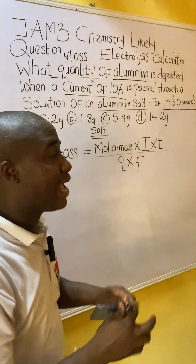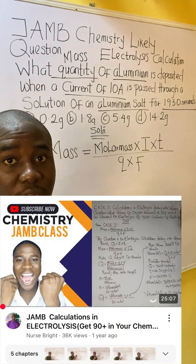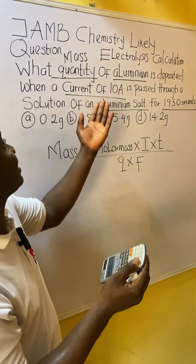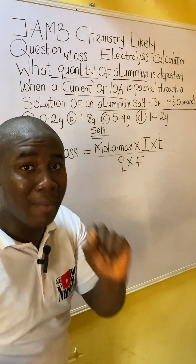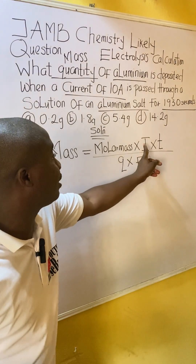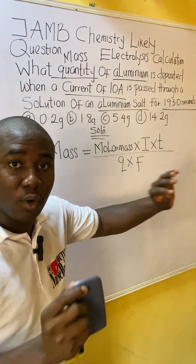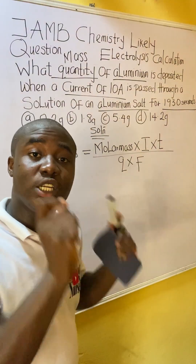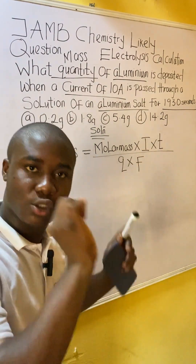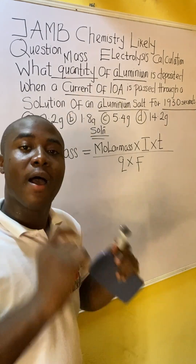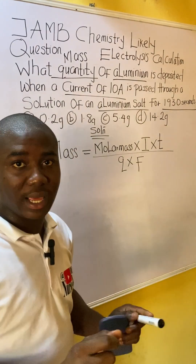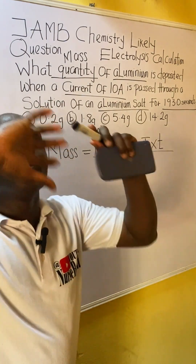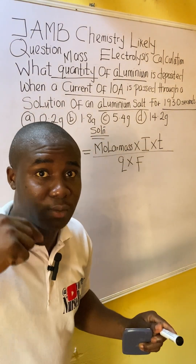I will explain the meaning of all the parameters in this formula. You can see they are asking for mass. They can tell you to calculate I, or C — it's just for you to make those variables the subject of the formula and solve the question. Watch closely as we solve this question together. The first thing you must know is the formula, and here is the molar mass parameter.